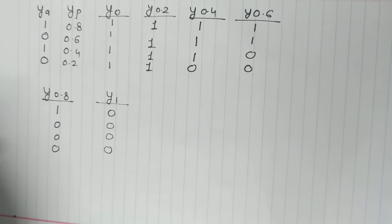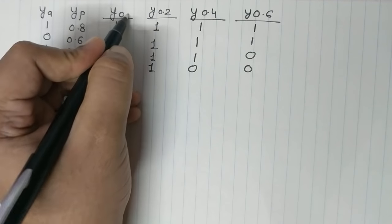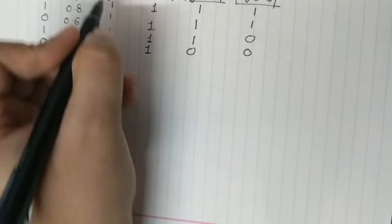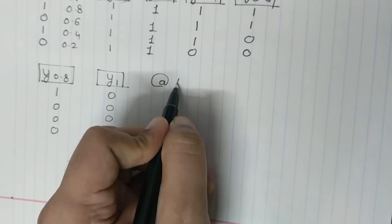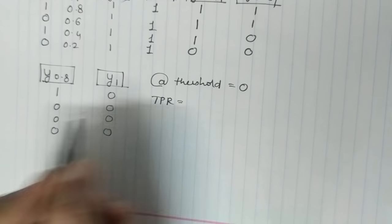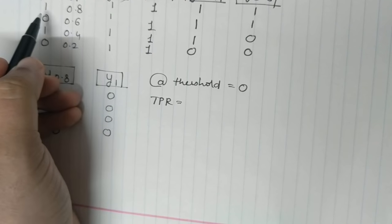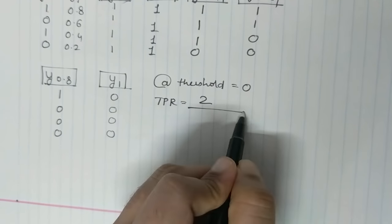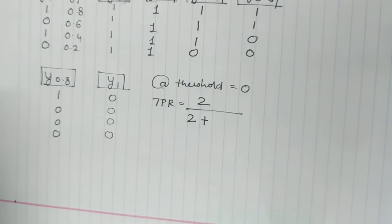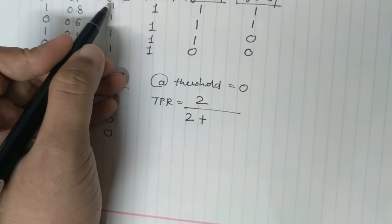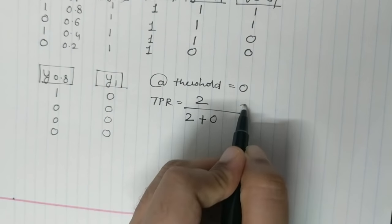Now let's calculate the true positive rate and false positive rate at threshold 0, 0.2, 0.4, 0.6, 0.8 and 1. So at threshold 0, my true positive rate is equal to true positive. So if you consider this, 1 and 1 is true positive, 1 and 1 is true positive. So I have two positive samples divided by two positives plus. I have the denominator now has false negatives. I don't have a zero here. I have zeros here, but there are no false negatives. So this value turns out to be 1.